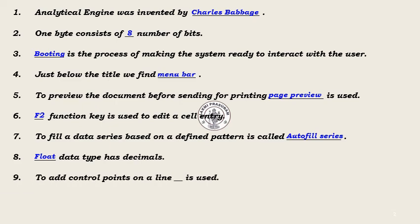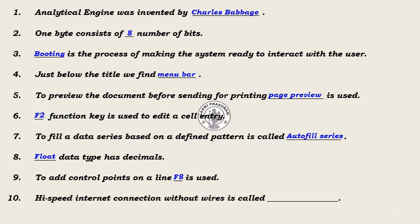Question 9: To add a control point on a line, dash is used — Answer: F8. Question 10: High speed internet connection without wires is called dash — Answer: Wireless Network.